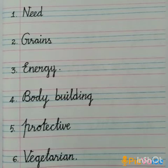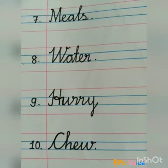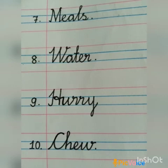Sixth one: Vegetarian — V, E, G, E, T, A, R, I, A, N. Vegetarian. Seventh one: Meals — M, E, A, L, S. Meals. Eighth one: Water — W, A, T, E, R. Water. Ninth one: Hurry — H, U, R, R, Y. Hurry. And last one: Chew — C, H, E, W. Chew.